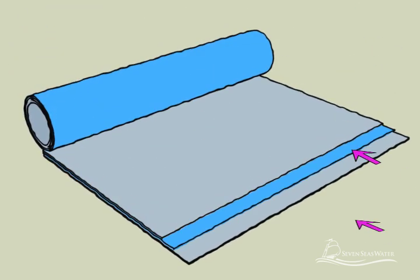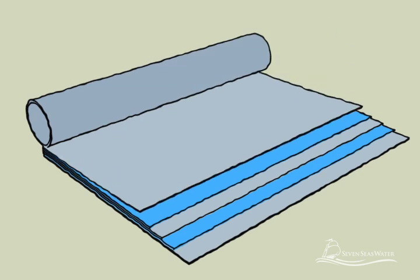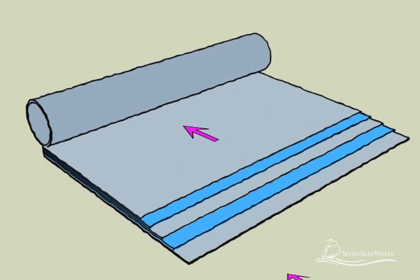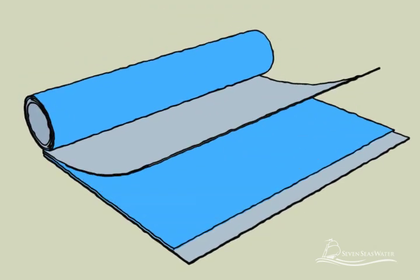The reverse osmosis membrane can be thought of as a number of sealed envelopes connected at their open ends to a tube. There are spacers between each envelope which allow water to flow across the membranes. The membrane envelopes and spacers are then wound around the tube like a roll of paper towels.